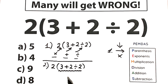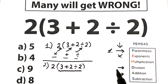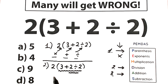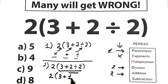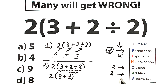Inside parentheses we have addition and division. Division is at a higher position, so it has higher priority — division is our second step, addition is our third step. So: division is our second step after the parentheses. Inside parentheses we have 3 plus 2 divided by 2. First, 2 divided by 2 equals 1. So we complete the division part. What about the addition part? 3 plus 1 equals 4.